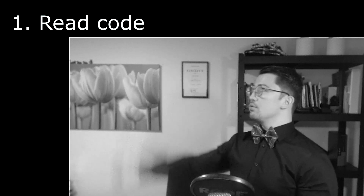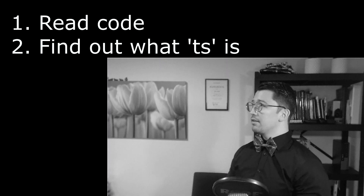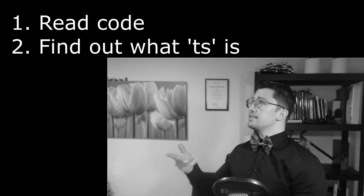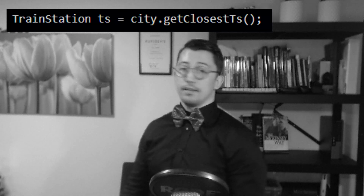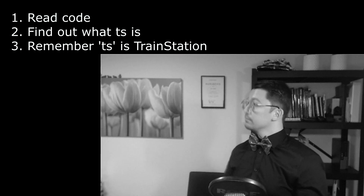The reason for this is surprisingly intuitive once you stop to think about it. Let's assume you're not familiar with the code — you got a new task to solve a problem in a class with shortened variable names like TS and T. Step one: you read the code. Step two: you stumble across this snippet — if TS has T, you're going to close TS. That means you have to find out what TS is. You find that TS is train station, and you have to remember that. That's step three.